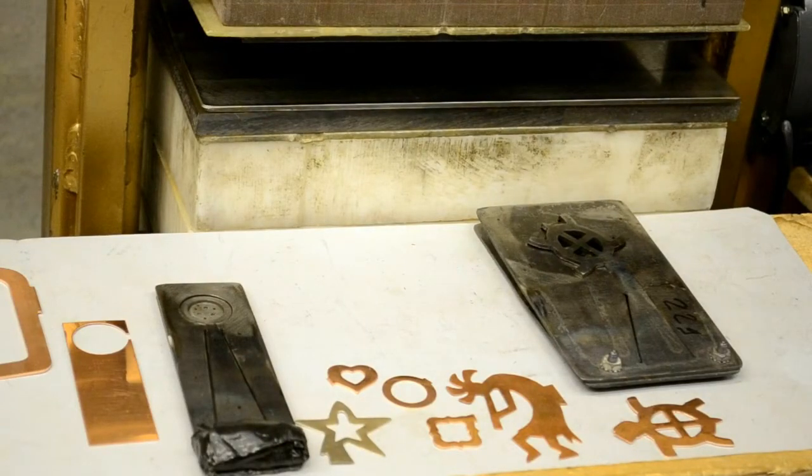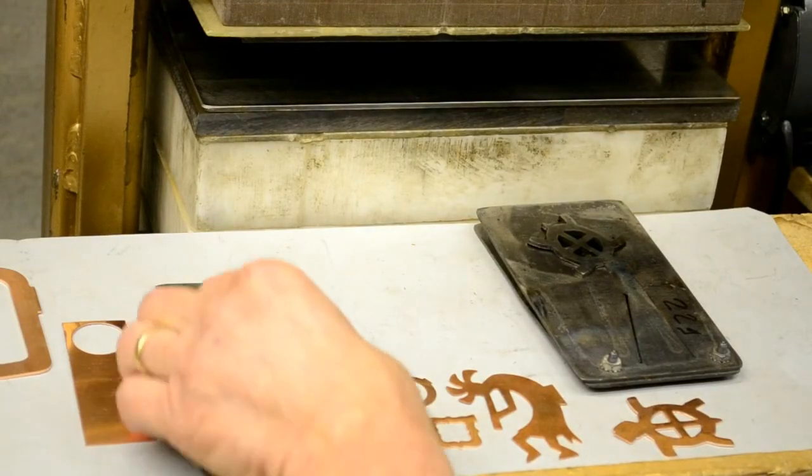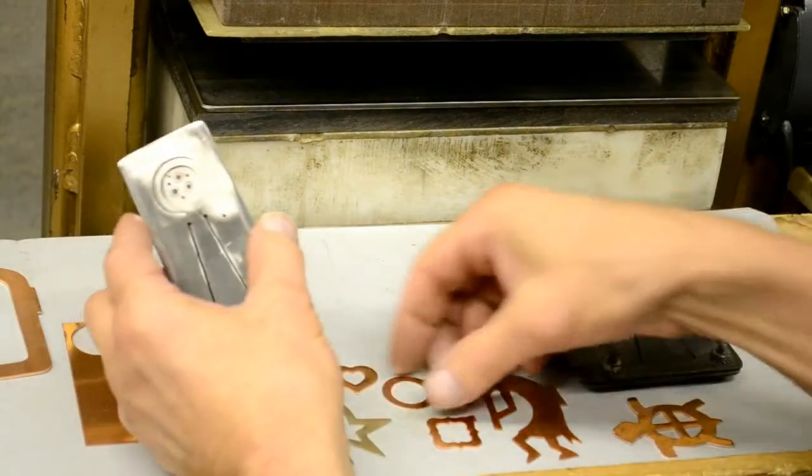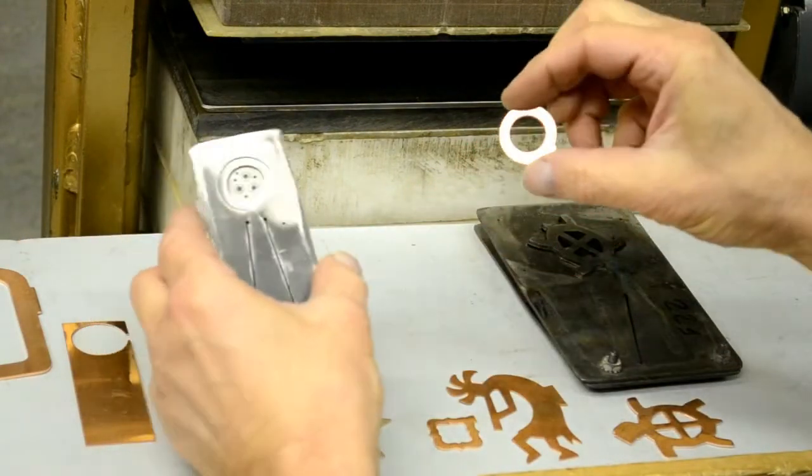Another version of the pancake die that I offer is what I call the donut die, which allows us to cut out a part and a hole in that part at the same time.